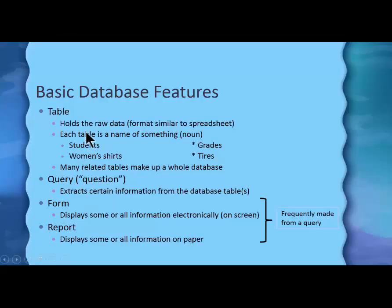Let me tell you about the main features of a database. Everything is based on a table. A table holds the raw data — it's kind of like a spreadsheet format. Every table is a name of something, a noun: students, women's shirts, grades, tires. Many related tables make up the whole database.